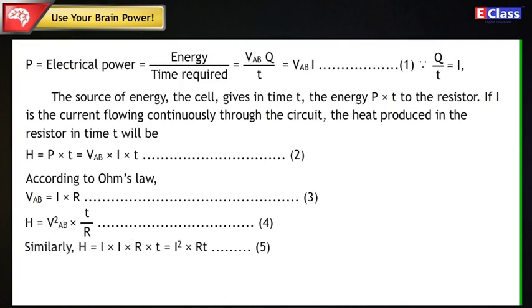Similarly, H = I×I×R×T, that is equal to I²×RT (Statement 5). H = I²×R×T is called Joule's law of heating.